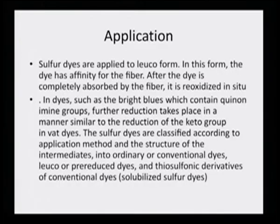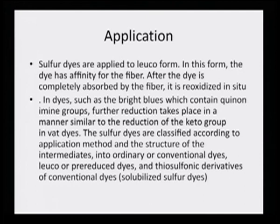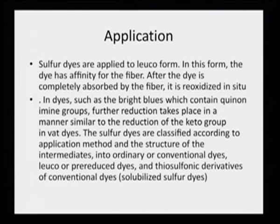The whole manufacturing process is simple, which is why sulphur dye production cost is low — if the process requires few ingredients, cost is automatically low. Sulphur dyes are applied in leuco form; in this form the dye has affinity for the fiber. After the dye is completely absorbed, it is re-oxidized in situ. In dyes such as bright blues containing quinonimine groups, further reduction takes place similar to the reduction of the keto group in vat dyes. Sulphur dyes are classified by application method and intermediate structure into conventional, leuco or pre-reduced, and thiosulphonic (solubilized) derivatives.